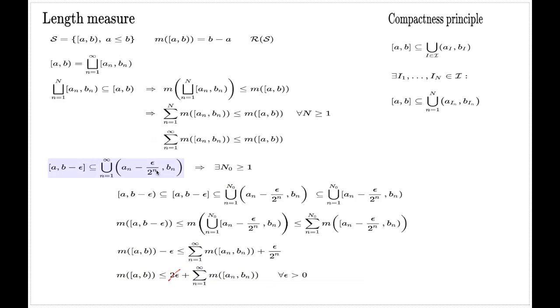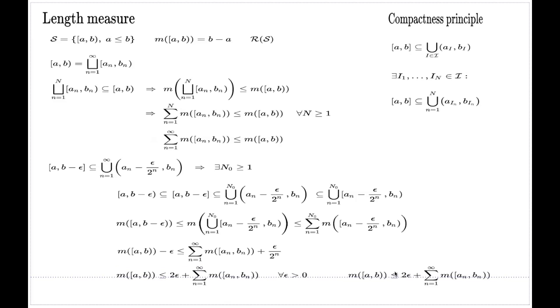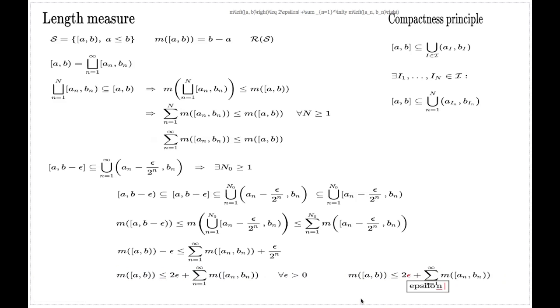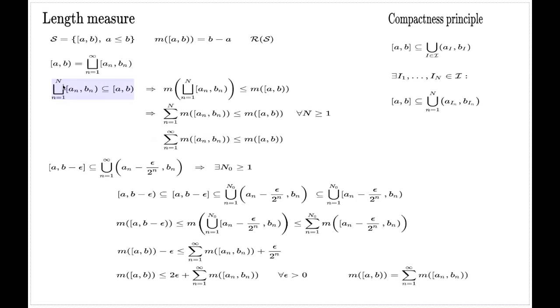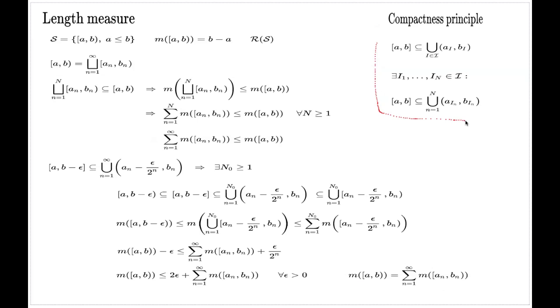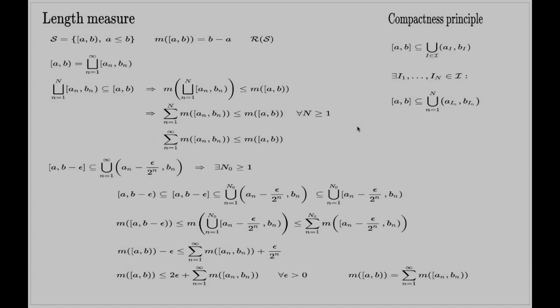This inequality holds for every epsilon independently, so we can let epsilon go to zero and obtain the inequality with no epsilon — the opposite inequality to the one we established first. Since we have established both inequalities, there is in fact an equality: the measure of the interval equals the infinite sum of the measures of the sub-intervals. We started with that assumption and arrived at this conclusion. I draw your attention to the fact that the compactness principle was really the key ingredient in the whole argument.